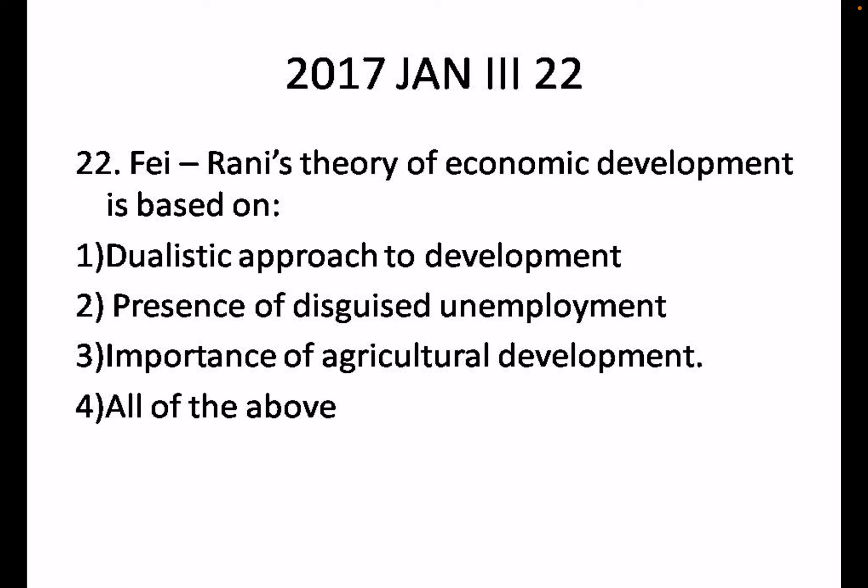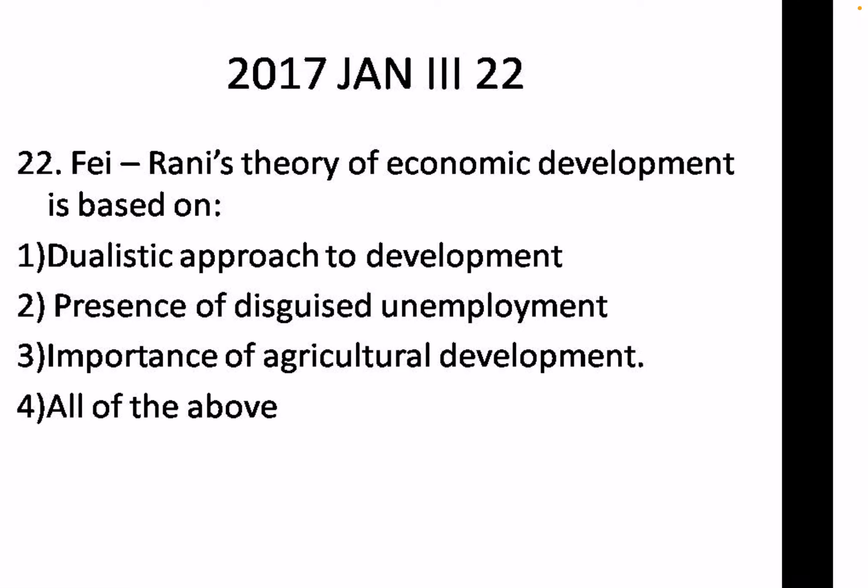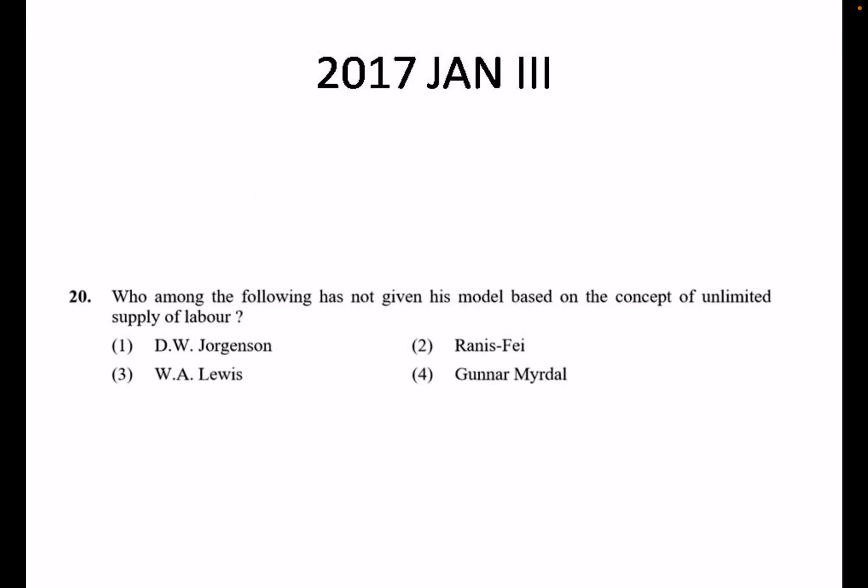Now let's look at previous year exam questions related to this topic. A question asked in 2017 January Paper 3: 'The Fei-Ranis theory of economic development is based on which of the following?' The answer is all of the above — dualism approach of development covering agriculture and industrial sectors, presence of disguised unemployment, and importance of agriculture development — all are correct.